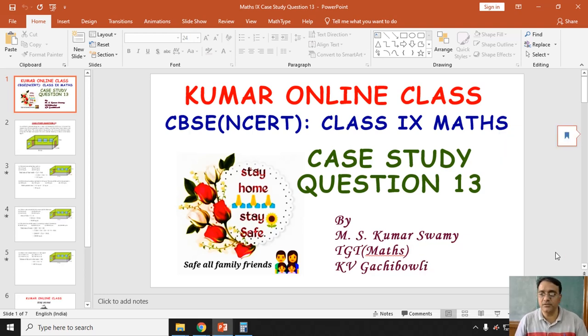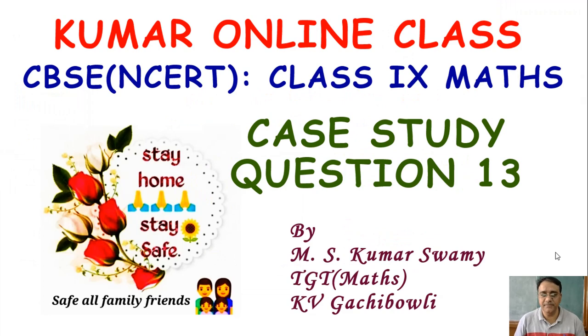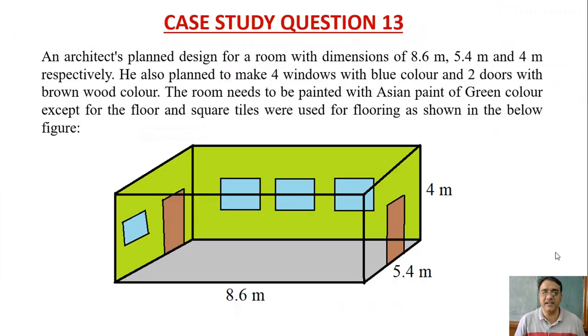Okay, so now we are going to start case study question number 13, which is based on surface areas and volume. An architect's planned design for a room with dimensions of 8.6 meter length, 5.4 meter breadth, and height 4 meter respectively. He also planned to make four windows with blue color and two doors with brown wood color.